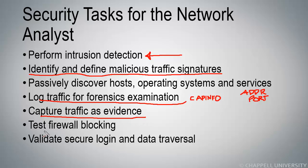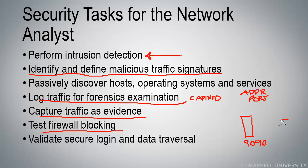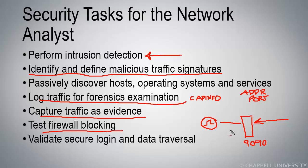We can also test firewall blocking. We can set up a firewall and tell it that we want to block all traffic to or from port 9090. Then from the outside, we would send a SYN packet to port 9090, and on the inside we would have a Wireshark system listening to determine if that traffic made it through the firewall or not.